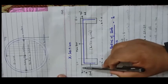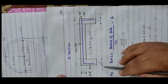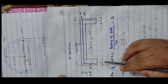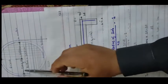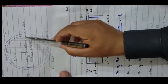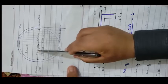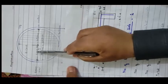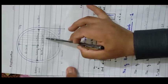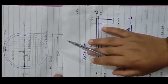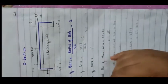The slab thickness is 6 inches, and the beam has dimensions of 12 × 12 inches. This is the diameter of the slab and this is the radius of the slab as shown in the cross-section.